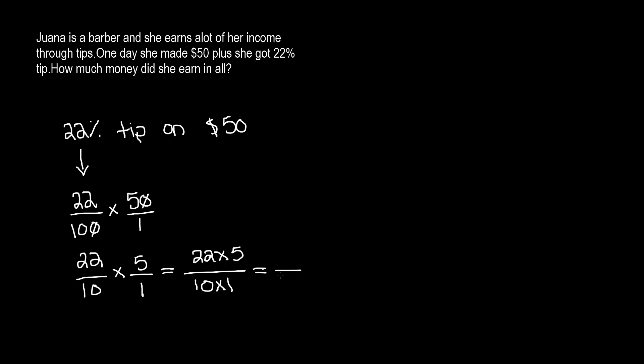So we know that 10 times 1 is 10, and 22 times 5, we have to calculate. We're gonna calculate 22 times 5. Let's do it over here. So 22 times 5: 5 times 2 is 10. Now we move on to the tenth place value, so 5 times 2 is 10 again.